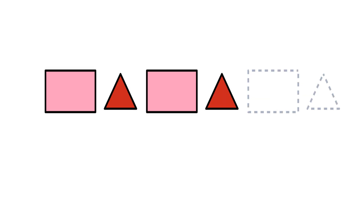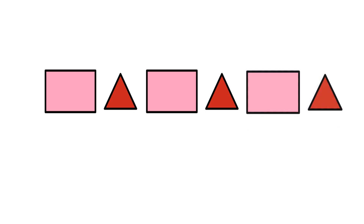Complete the pattern. First we will identify the rule. A square, a triangle, square, triangle. What will come at the pattern? One square, one triangle, one square, one triangle, one square, one triangle.